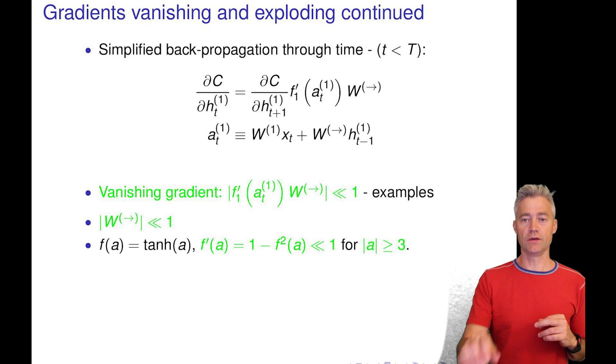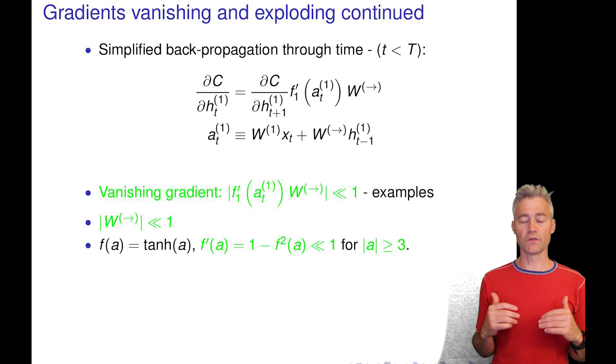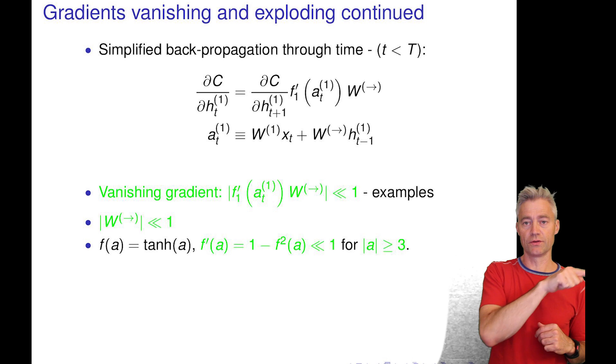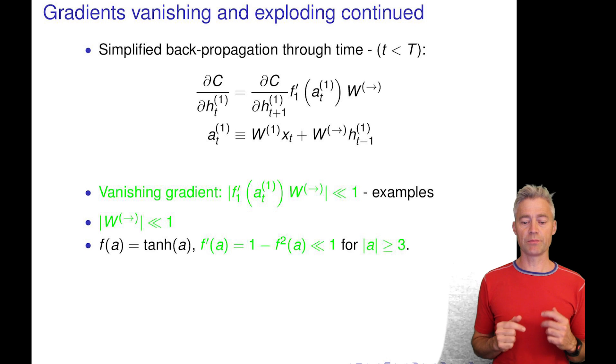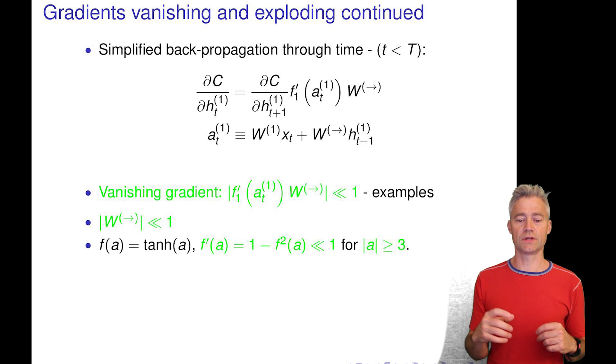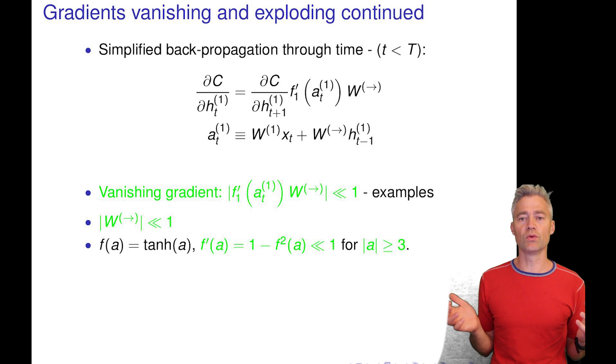Or it can happen if the derivative of the activation function becomes small. And let's take as an example the tangent hyperbolic. If the input argument is very large, plus minus, then the derivative becomes very close to zero. Remember we have this kind of S shape. So that means that if our activation at one time instant is numerically very large, then it means that the gradients back in time are simply killed.